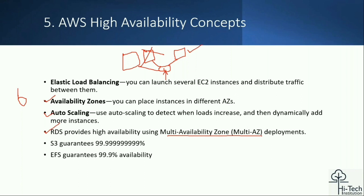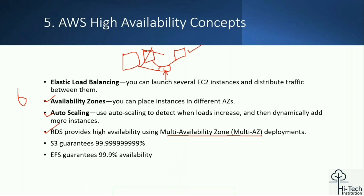The fourth strategy is RDS multi-AZ high availability. RDS is a Platform as a Service offering. Whenever you create any specific database in AWS, by default the data is distributed behind the scenes. A backup is taken for the first Availability Zone, the same backup is associated with the second AZ, and a third — they manage three availability zones in the backend.